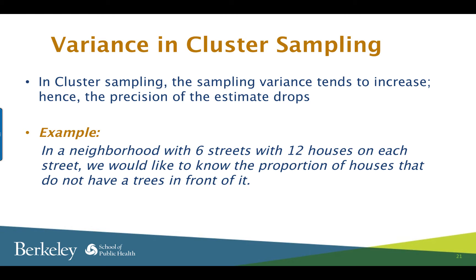Say we have a neighborhood with six streets and there are 12 houses on each street, and we would like to know the proportion of houses that do not have a tree in front of it. It is possible that households with higher socioeconomic status would choose to live on streets where there are more trees, and households with lower socioeconomic status may have to live on streets that do not have many trees.